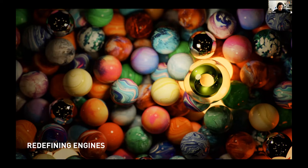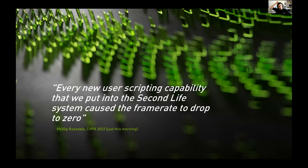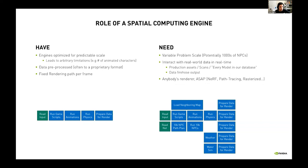We need to redefine the engine. It can't be static — it can't sit at the edge device or one desktop if it needs to handle all these things. Phil Rosedale said this morning that every new user scripting capability added to Second Life caused the frame rate to drop to zero. Researchers adding code into an engine need significant work to make it run in real time. What we really need is engines that can run 10,000 NPCs, or physics, weather, and water simulations at gigantic scales, or use NeRF or other rendering approaches.